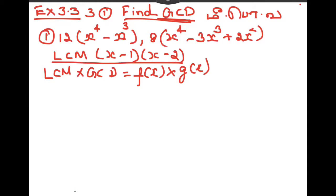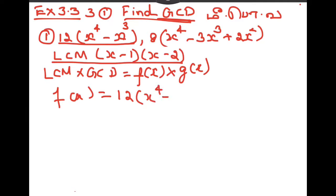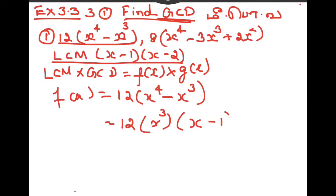First, we can do F of x. F of x is equal to 12 into x to the power of 4 minus x cube. If we factor this, we get x cube into x minus 1.